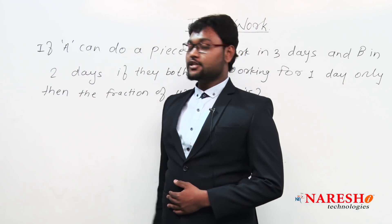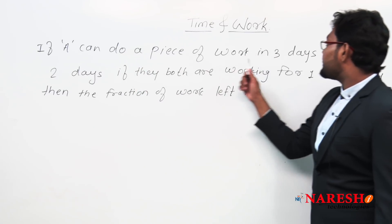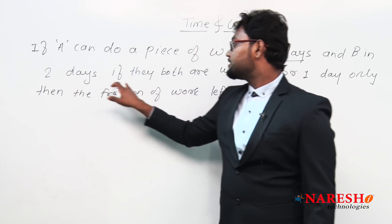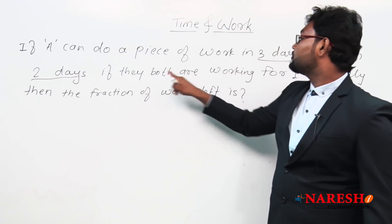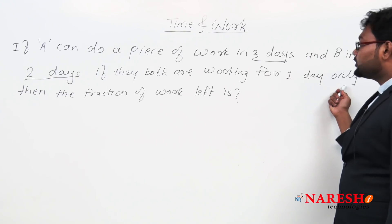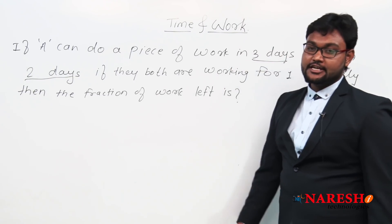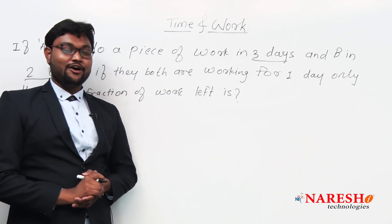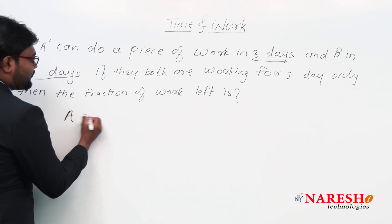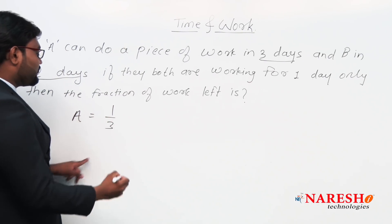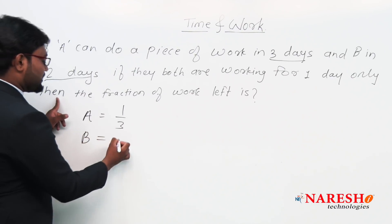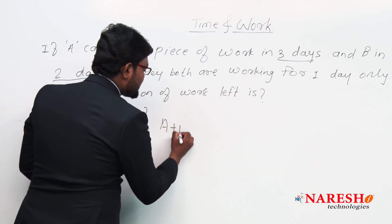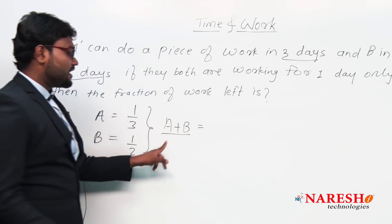Next question: A can do a piece of work in three days and B can do the same piece of work in two days. If they both work together for one day only, then what is the fraction of work left? First, we calculate their individual one-day works — one-day work of A is one by three, and one-day work of B is one by two.